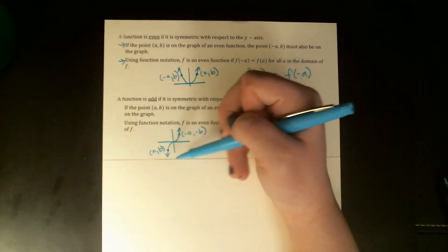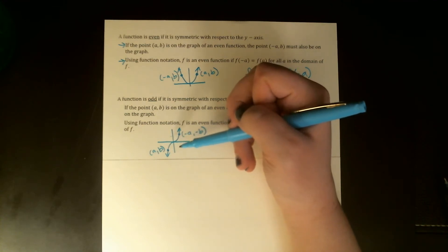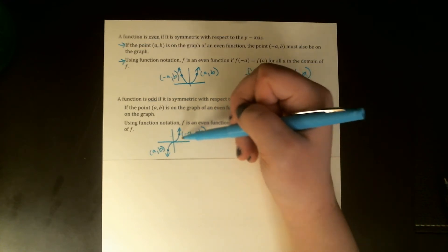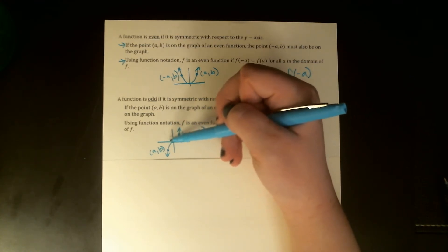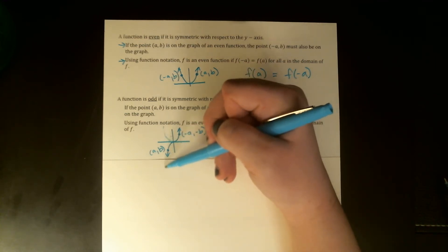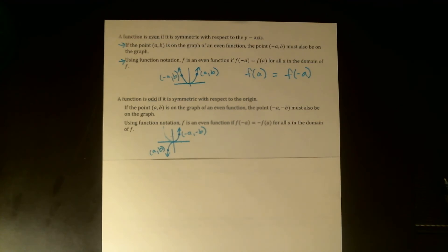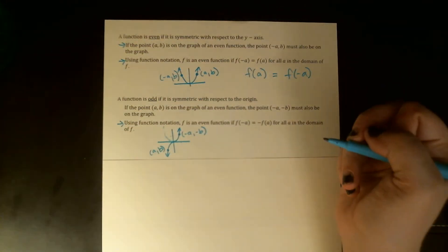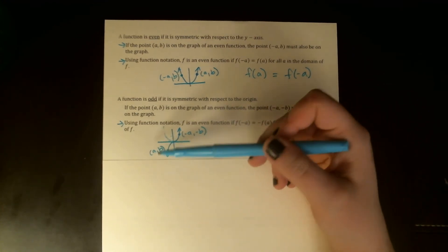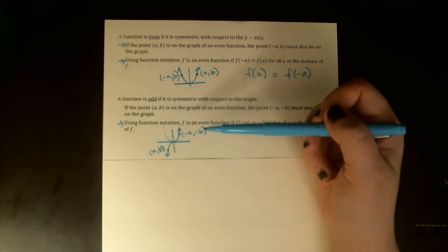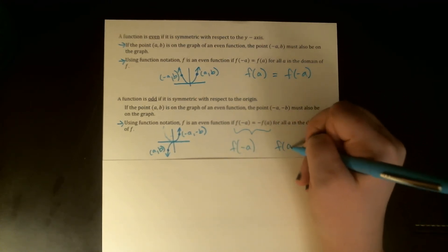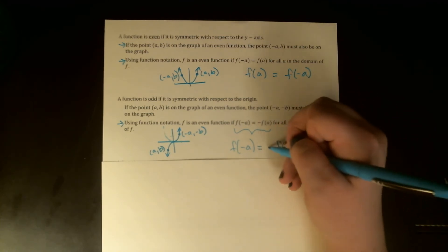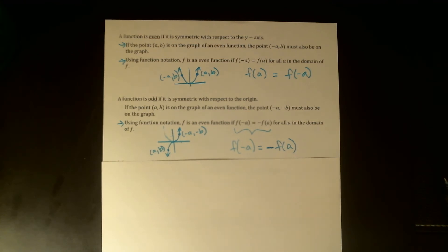If you rotate 180 degrees, the graph should look exactly the same. Or thinking about folding, you'd fold twice — pick up any one quadrant, fold across the y-axis, then across the x-axis, and it lands exactly on what you have in the opposite quadrant. Using function notation: if you plug in the opposite x value, you get the opposite y value — f(−A) = −f(A). Opposite x values pair with opposite y values.